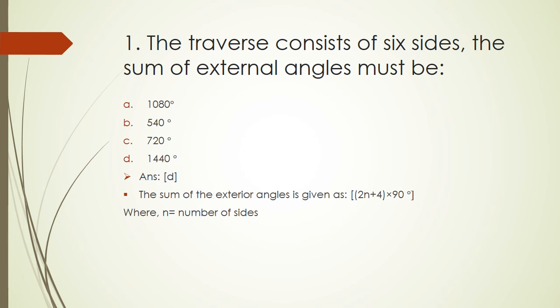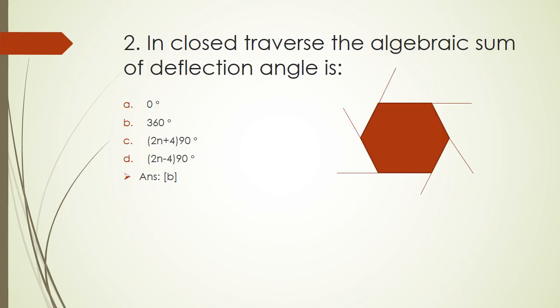Also we should remember the sum of interior angles of the traverse is given as (2n-4)×90°.